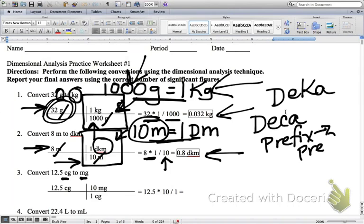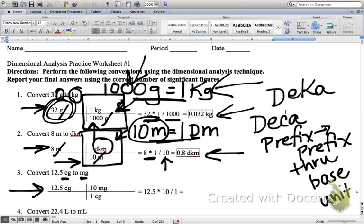And do you guys remember what I said if we're going from prefix to prefix, that we needed to go through what? If we're going prefix to prefix, we should go through the base unit. We should go through the base unit. So what I'm going to do is I'm actually going to set it up a little bit differently than what is shown right here. So in other words, I'm going to figure out how many centigrams are in a gram.